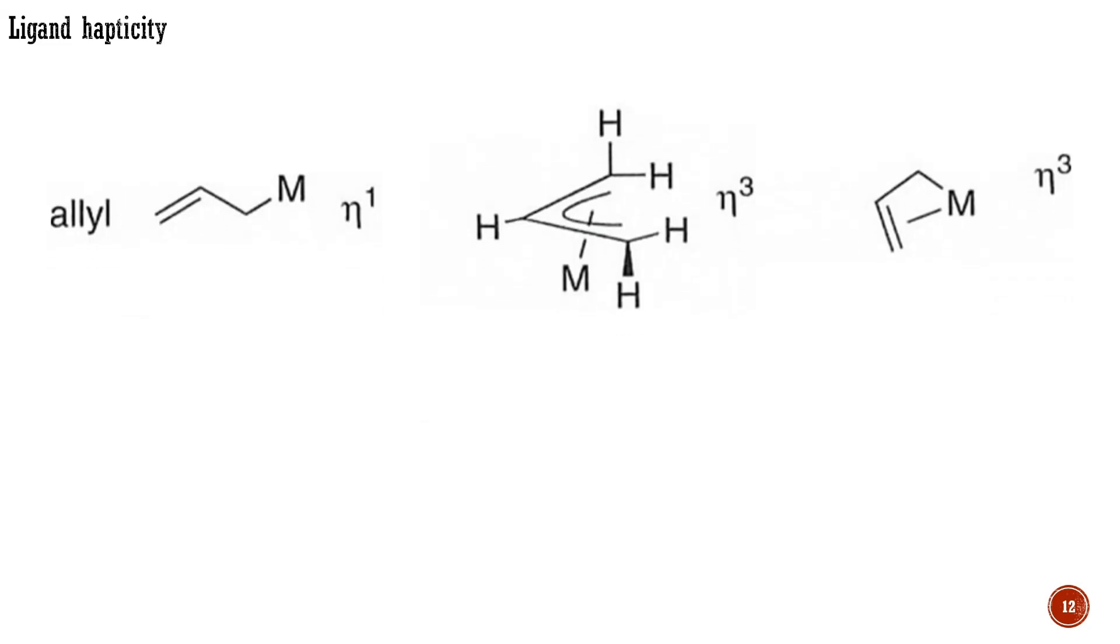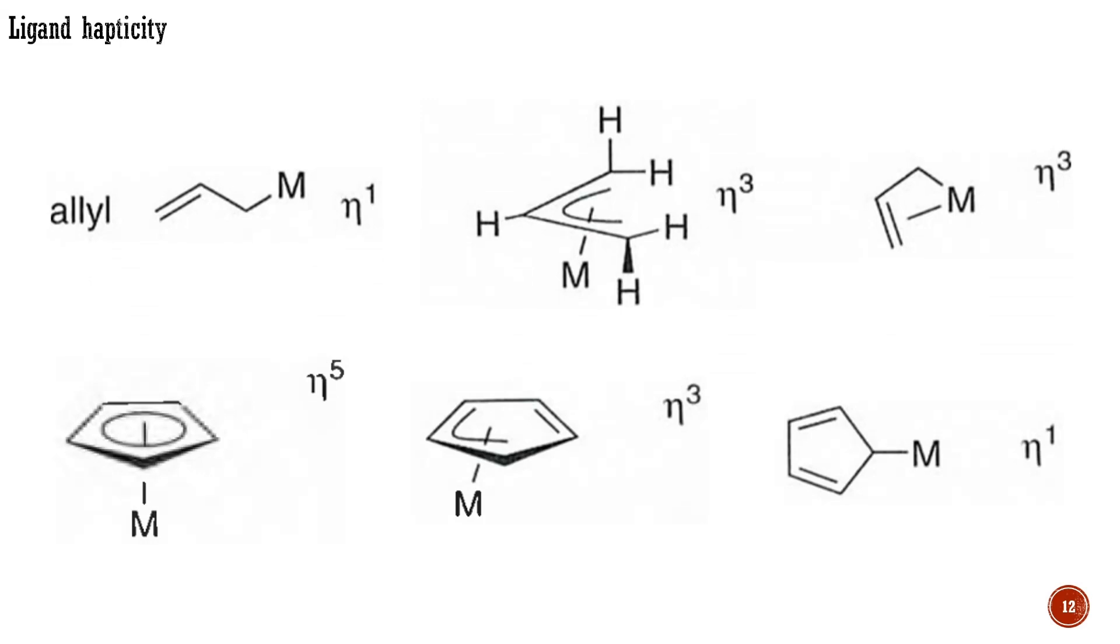The cyclopentadienyl ligand most commonly bonds in an η⁵ fashion, filling three coordination sites and acting as a 6-electron donor, although η³ and η¹ coordinations are known.